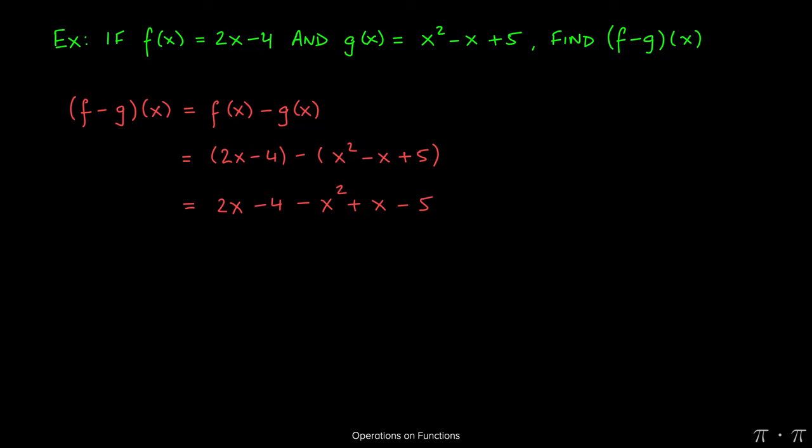So when we do this, negative times x squared will yield negative x squared. Negative times a negative will yield a positive x. Negative times a positive will yield a negative 5.